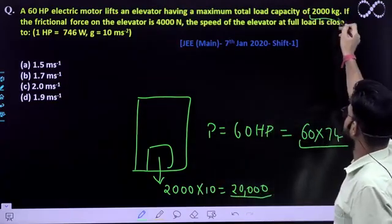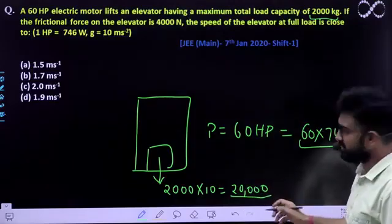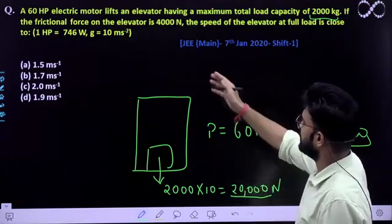So this 2000 kg weight comes out to be 20,000 newtons. That much weight you have. So this much has to be lifted. Okay? Now see what else is asked in it.